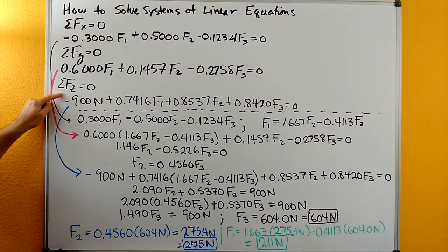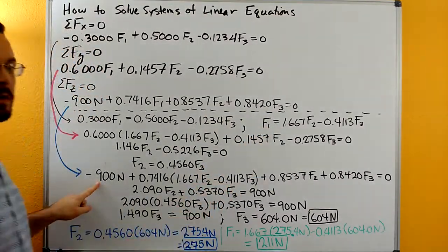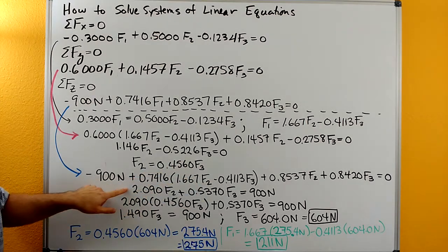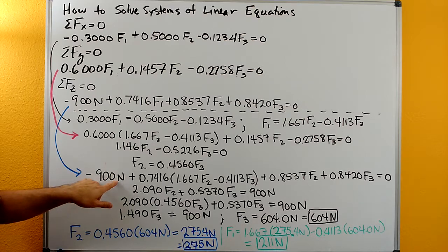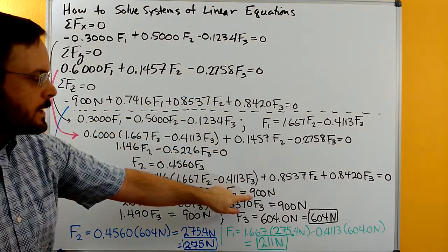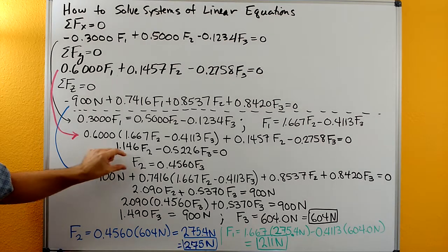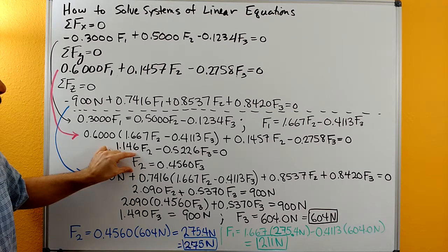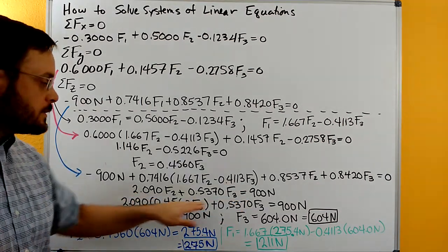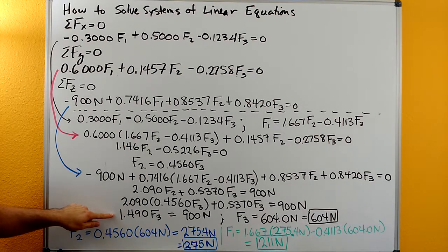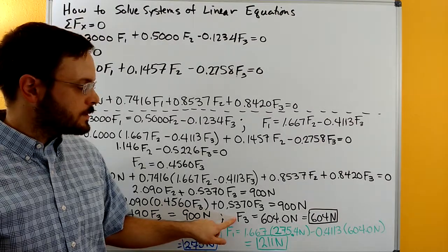Now we take that last equation, bring it down, and make the substitution again — replacing f1 with that expression. Going through and combining terms gives us 2.090 f2 plus 0.5370 f3. We add the constant term to both sides to get 900 newtons on the other side. Then we make the second substitution, replacing f2 with 0.4560 f3. Now everything is a function of f3. Combining all terms gives 1.490 f3 equal to 900, so dividing through gives f3 equal to 604 newtons.